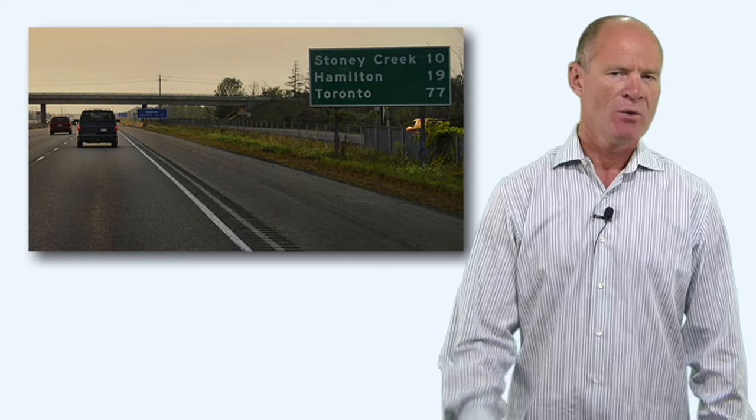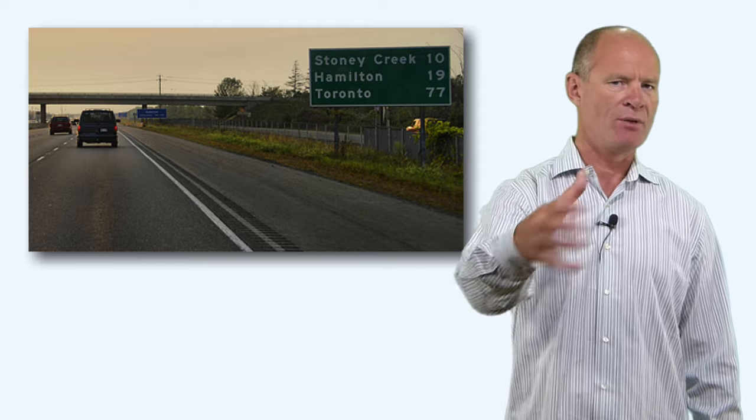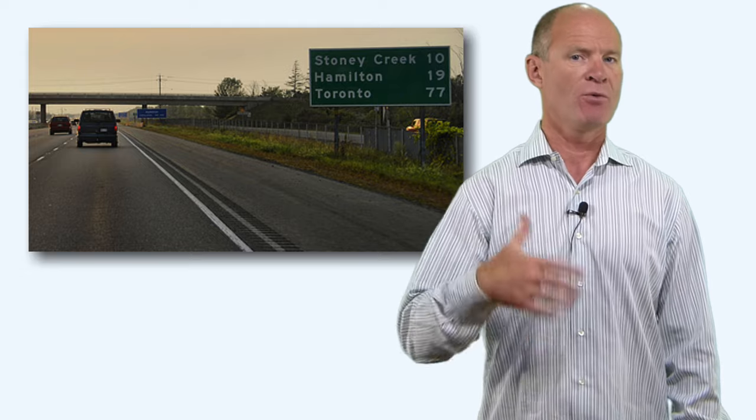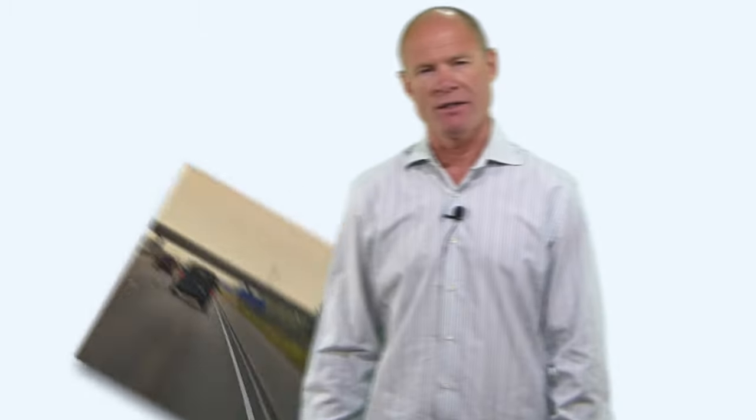The last major sign category is the destination sign — usually green with white lettering — which tells you how far you are from a destination. For example, if you're in Kitchener, Ontario traveling to Toronto, it will tell you the distance. If it's 110 kilometers to Toronto and you're traveling at 120 kilometers per hour — the speed limit on the 401 — you know it'll take about an hour to get there. Destination signs can give you an estimated time of arrival based on distance and speed.